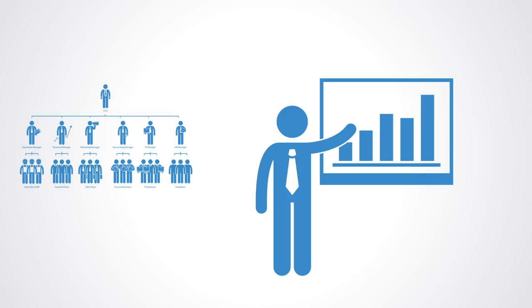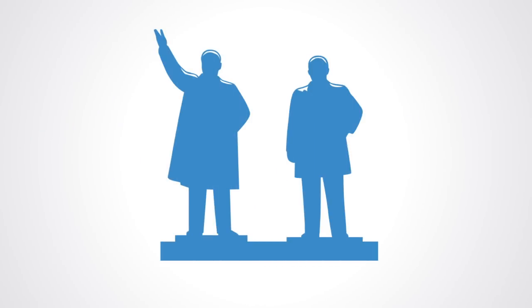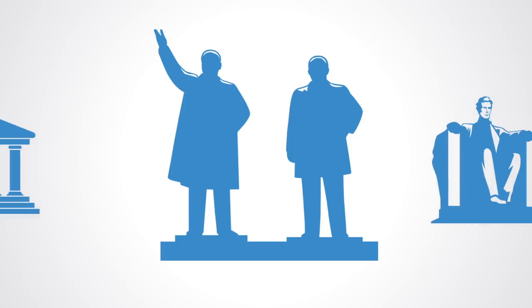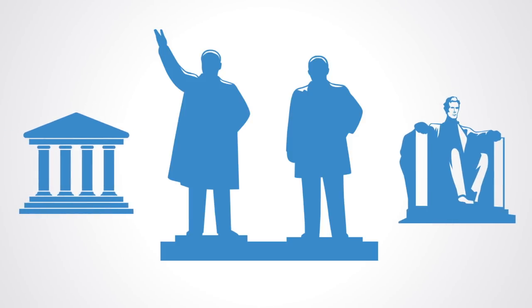Then use subsidies, taxes, and various forms of regulation to try to allocate resources according to some centralized vision. This we would call a command-and-control economy, as exemplified by the former communist system. But it is also a key part of how most economies are managed today by their respective national governments.